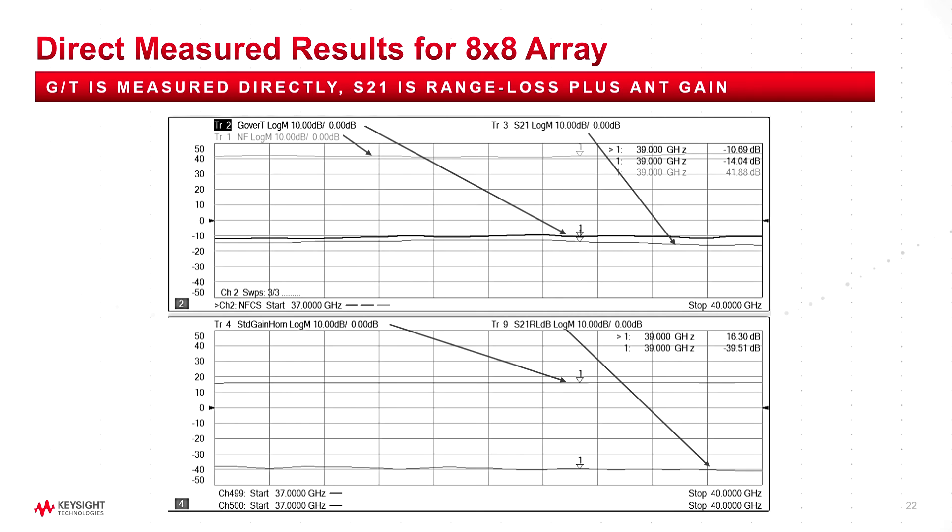Here's a plot of that G/T measurement. So here you can see the noise figure of the system across frequency. This is the S21 of the system across frequency. Down here, these are not measurements, but data from the standard gain horn from the manufacturer, and the range loss from the previous measurement using the gain horn instead of the antenna. And they all go into this equation that computes the G/T directly. And you can see a variation of G/T across the antenna with the highest or best G/T here.